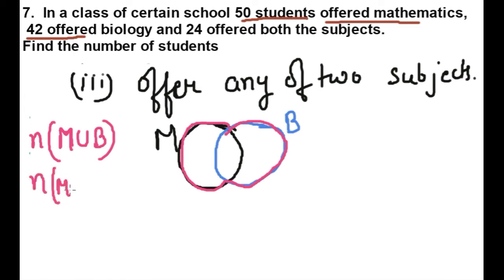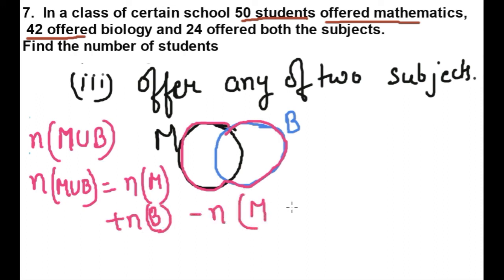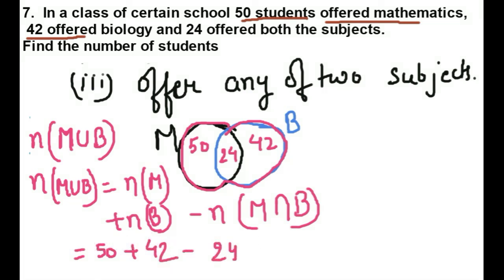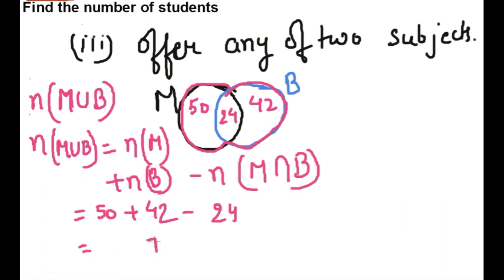M union B equals number of students in M plus number of students in B minus number of students in M intersection B. We have: number of students in M is 50, number of students in B is 42, and M intersection B is 24. So 50 plus 42 minus 24 equals 68. So 68 is the answer.